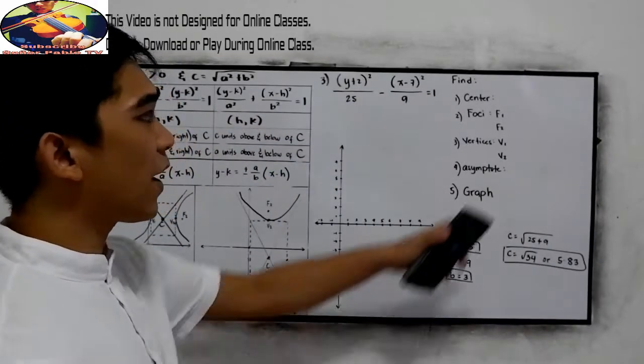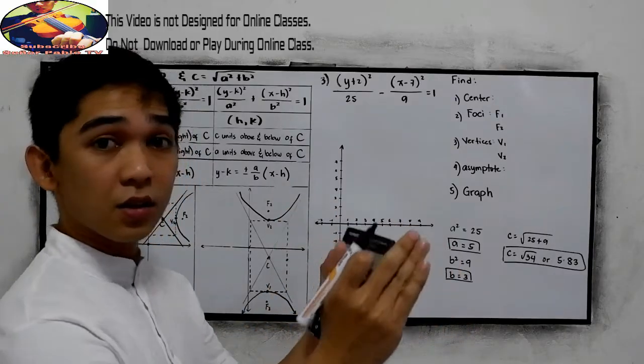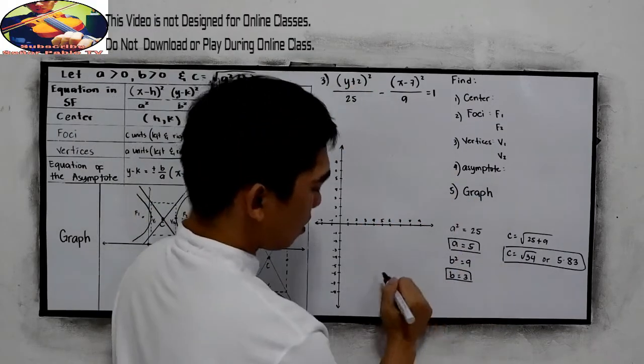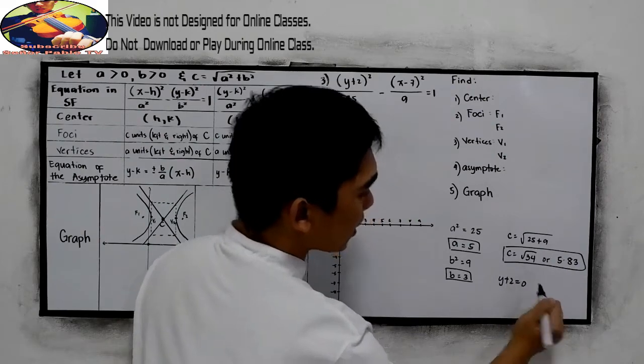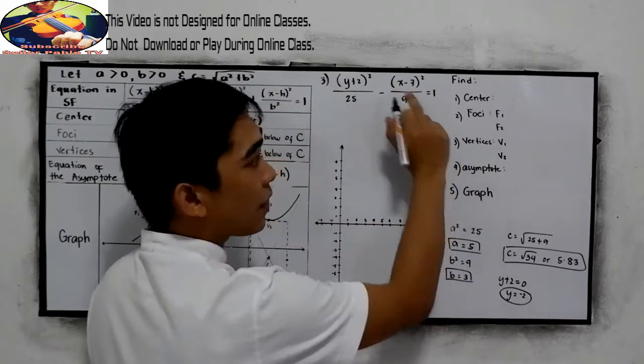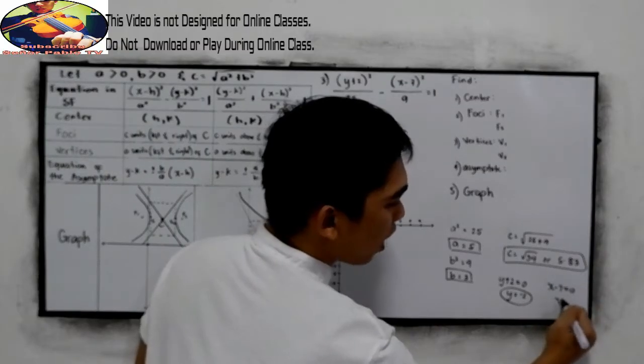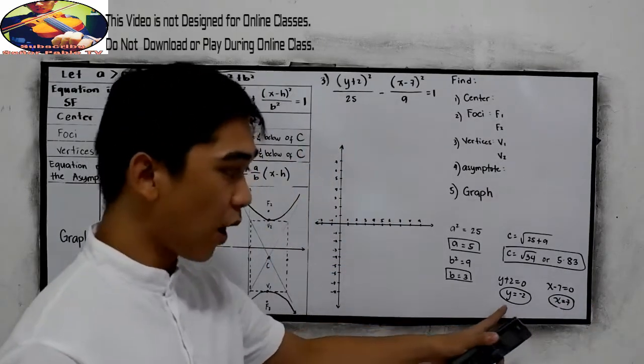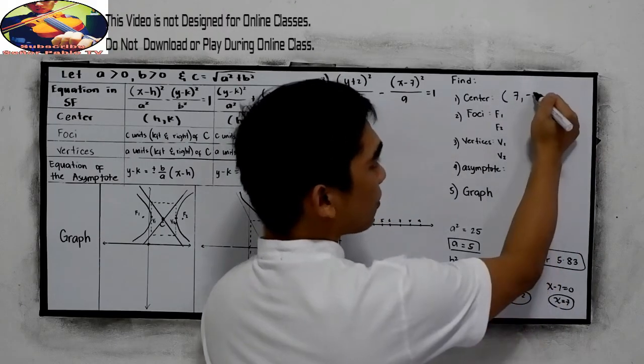Now, let us find the center. We're going to find the hk. So hk, so equate, y plus 2 is equal to 0. So our y is equal to negative 2. And the other one, x minus 7 is equal to 0. So our x is equal to 7. And x and y, so our center is 7 negative 2.